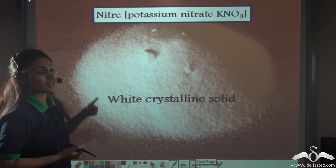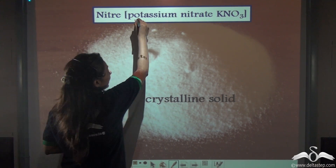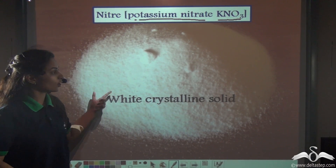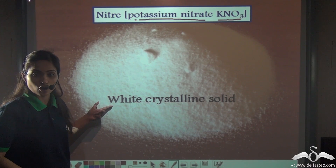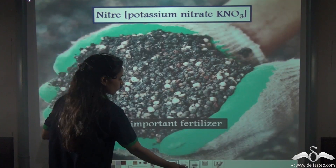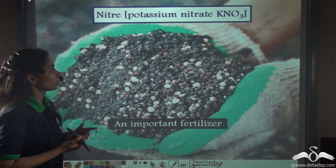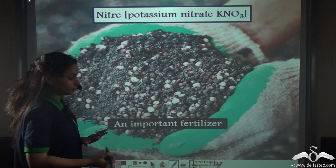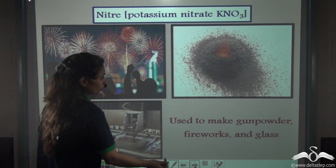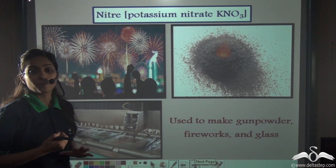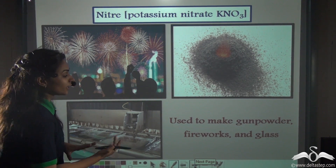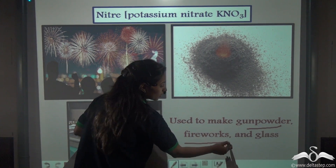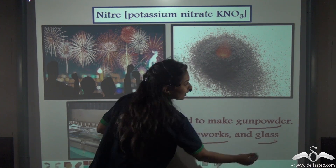Next we have nitre, that is potassium nitrate, KNO3. This is also a white crystalline solid and it is an important fertiliser. Apart from being an important fertiliser, it is used to make gunpowder, fireworks, and glass.